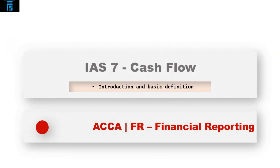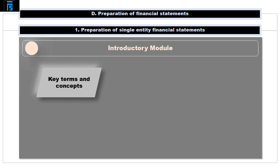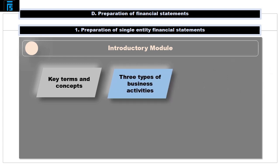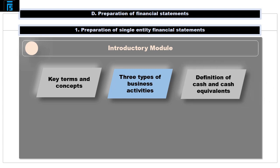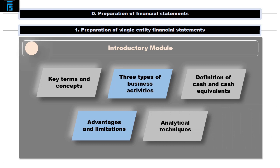Welcome to the first video in a five-part section of the course devoted to the topic of IAS 7, Statement of Cash Flows. In this introductory module, we will be analysing the key terms and concepts contained in the standard, introducing the three types of business activities for which cash flows must be identified and presented, and inspecting the definition of cash and cash equivalents. In the second half of the module, we will also discuss the advantages and limitations of the statement of cash flows and introduce analytical techniques used in its interpretation.